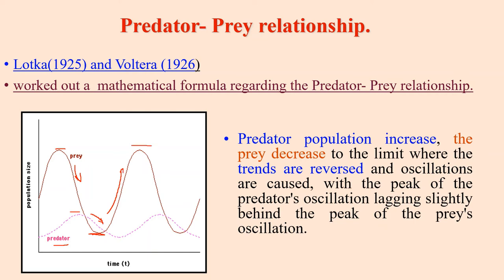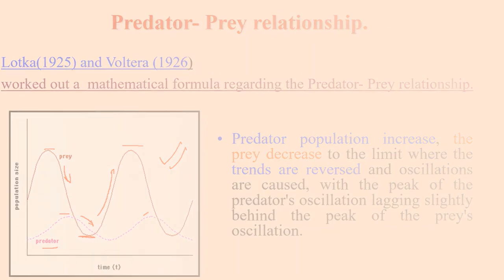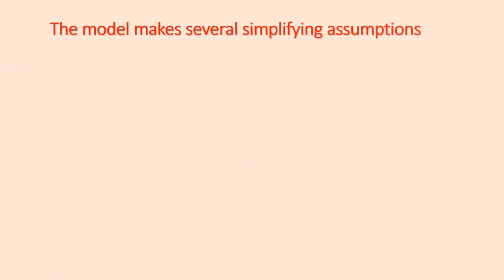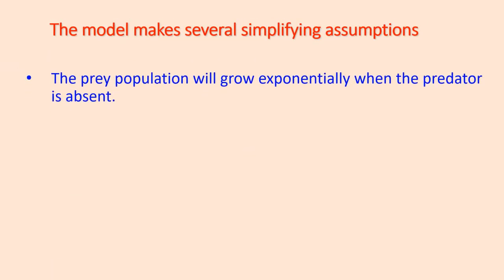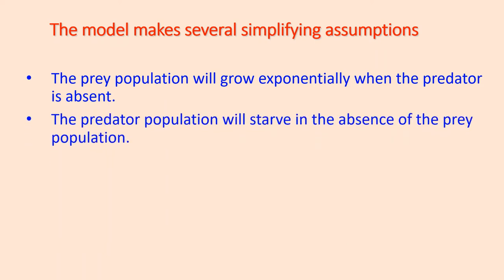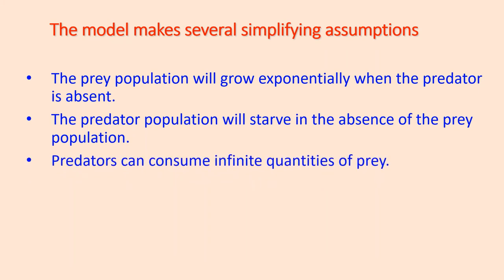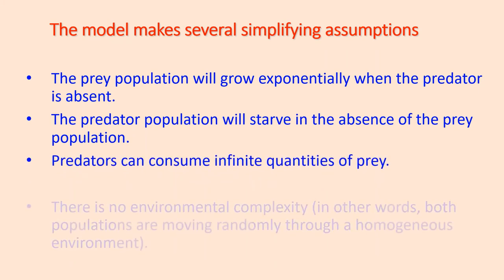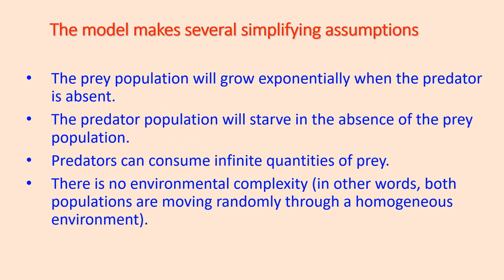The Lotka-Volterra model makes several simplifying assumptions. First, the prey population will grow exponentially when the predator is absent. Second, the predator population will starve in the absence of prey. Third, predators can consume infinite quantities of prey. And fourth, there is no environmental complexity — both populations are moving randomly through a homogenous environment.